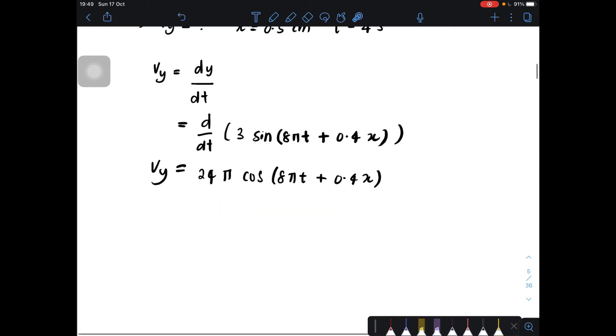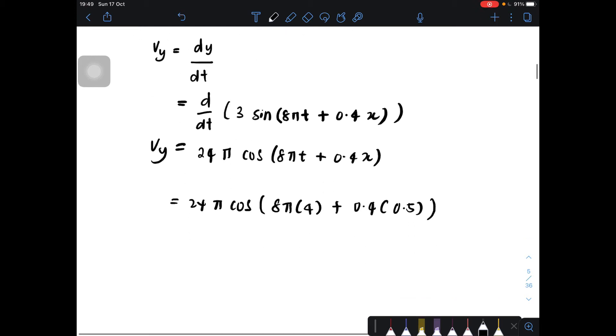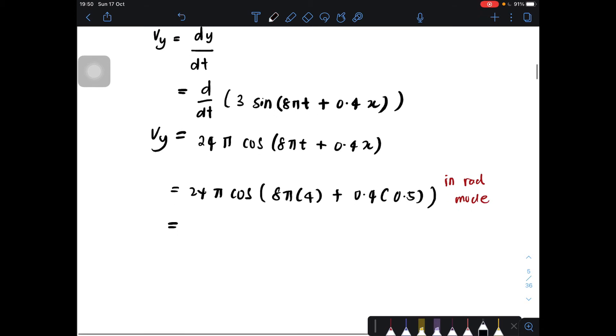And then after that, because we want to find what is vy when this condition is given. So just substitute x and t into here. So you just substitute that value, 24 pi cos 8 pi t is 4 seconds plus 0.4 x is 0.5 cm. And then you just use calculator. Make sure your calculator is in radian mode.